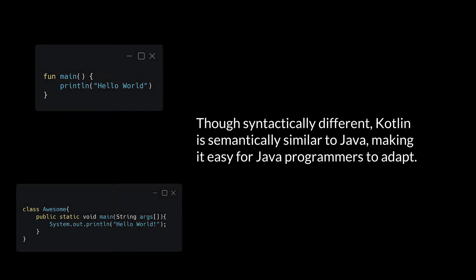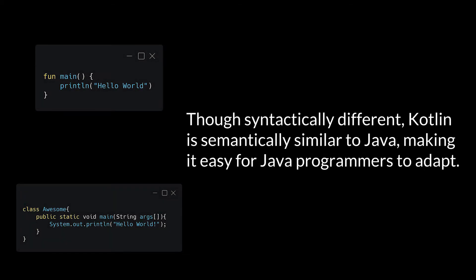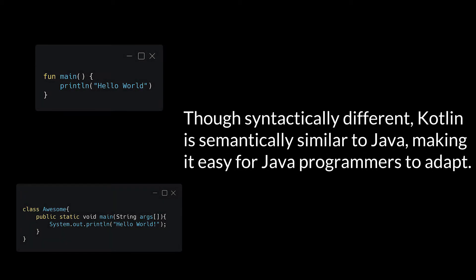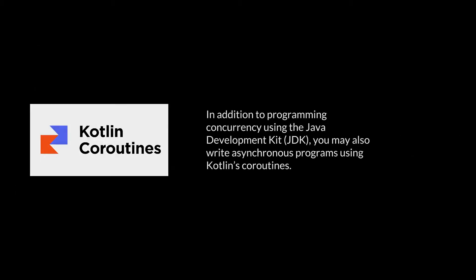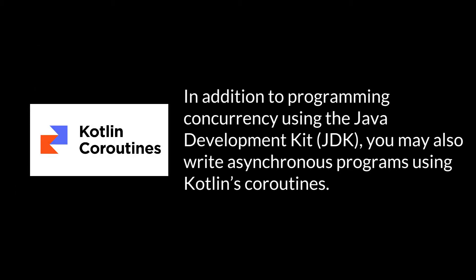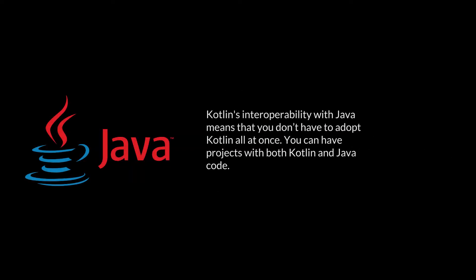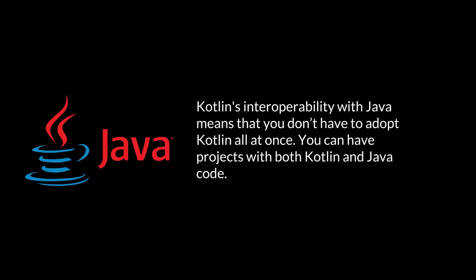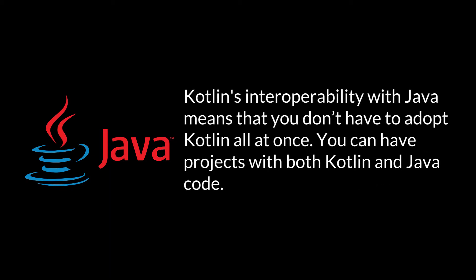Though syntactically different, Kotlin is semantically similar to Java, making it easy for Java programmers to adapt. In addition to programming concurrency using the Java Development Kit (JDK), you may also write asynchronous programs using Kotlin's coroutines. Kotlin's interoperability with Java means that you don't have to adopt Kotlin all at once. You can have projects with both Kotlin and Java code.